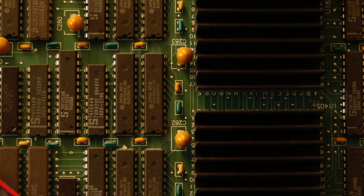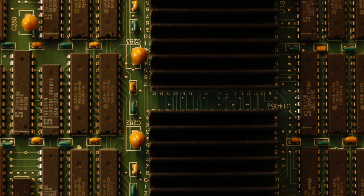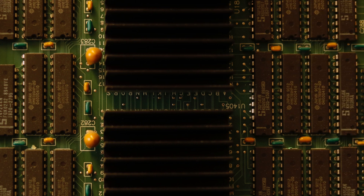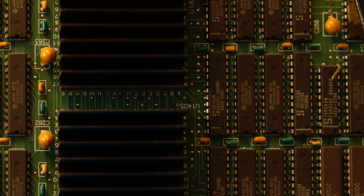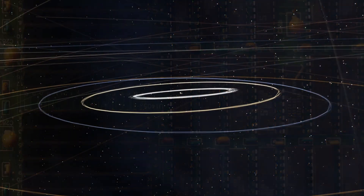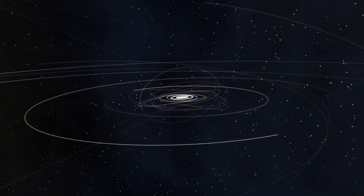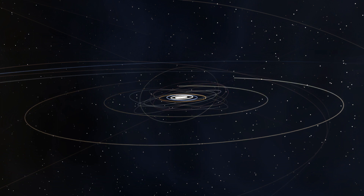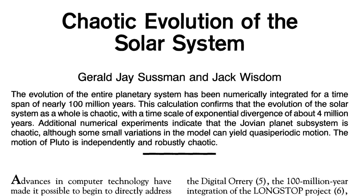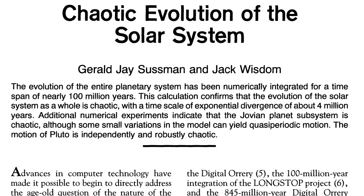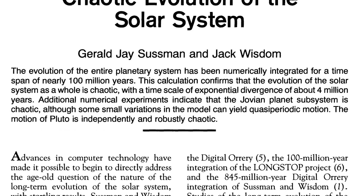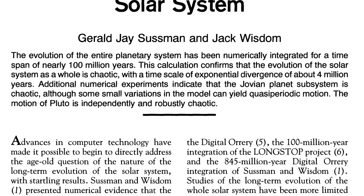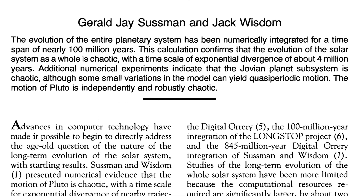Jerry Sussman built another supercomputer, and I developed a new algorithm with my student Matt Holman. Combined, these allowed us to study the evolution of the whole solar system without approximation. We found that indeed the solar system, including the Earth, evolves chaotically with a five-million-year Lyapunov time. This is most strongly manifest in the motion of Mercury, where the eccentricity of Mercury's orbit can vary by a factor of two over billion-year timescales.